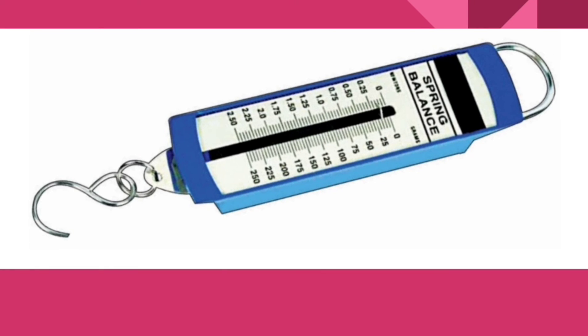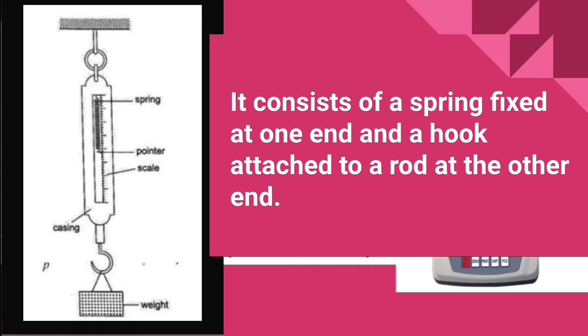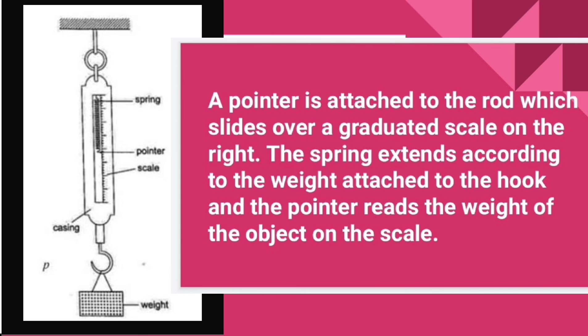Spring balance helps us to find the weight of an object. It consists of a spring fixed at one end and a hook attached to a rod at the other end. A pointer is attached to the rod, which slides over a graduated scale.